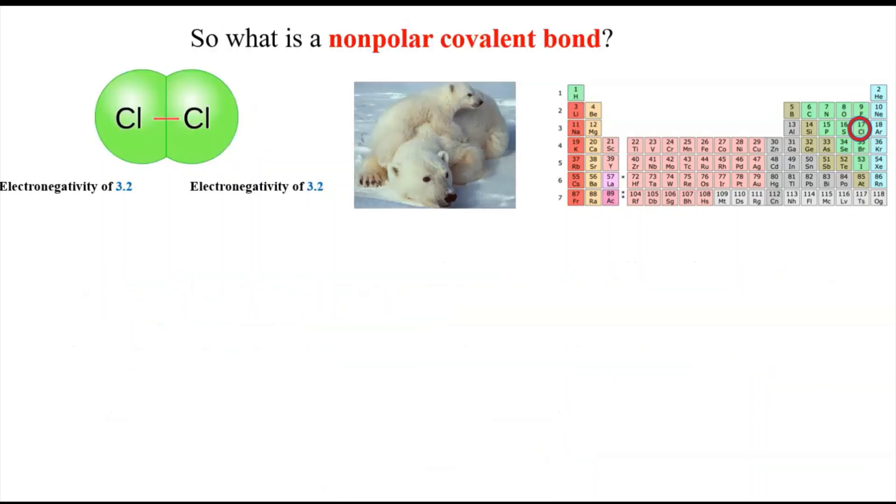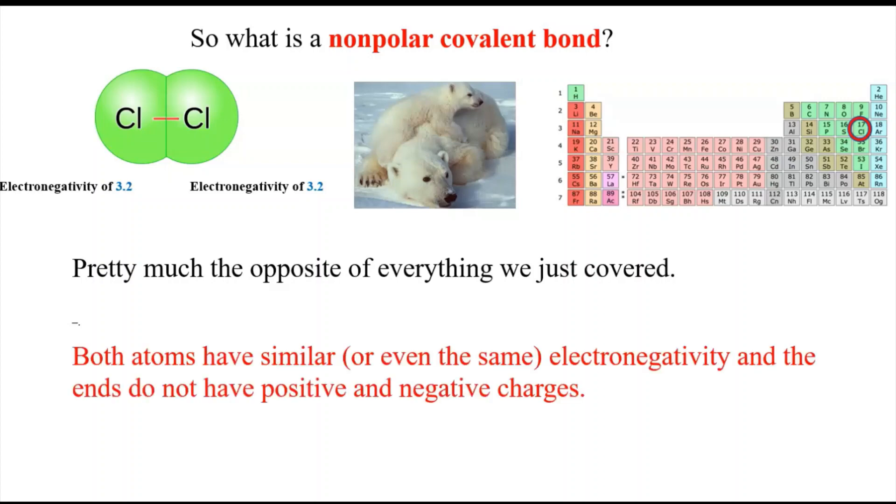What about non-polar covalent bonds? It turns out it's pretty much the opposite of everything that we just covered. Here, both atoms in a non-polar covalent bond have a similar electronegativity or even the same electronegativity as shown here in the chlorine molecule. And so therefore, the electrons are distributed evenly and you don't have a positive or a negative charge.